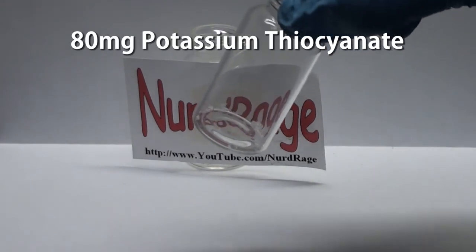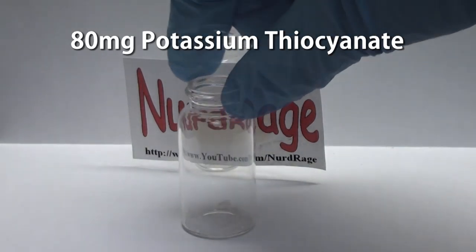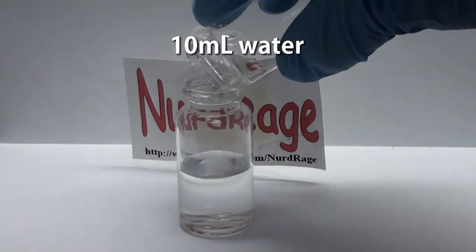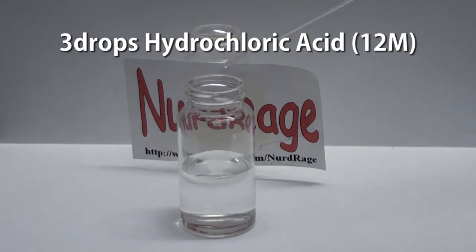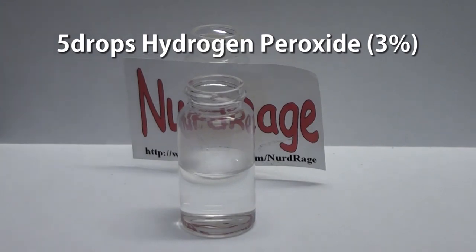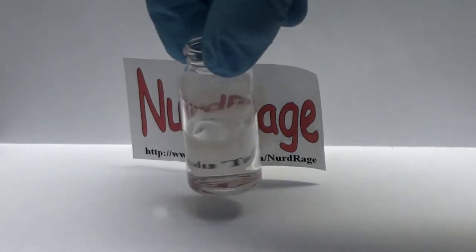First get about 80mg of potassium thiocyanate. Now add in 10mL of water, 3 drops of concentrated hydrochloric acid and 5 drops of 3% hydrogen peroxide. Shake up the mixture until completely dissolved.